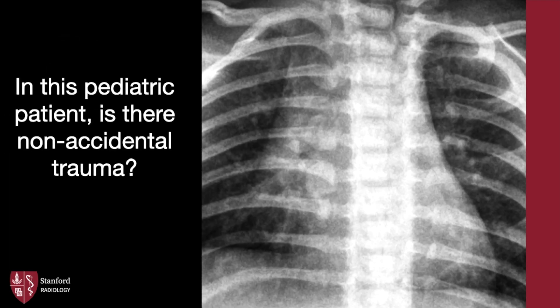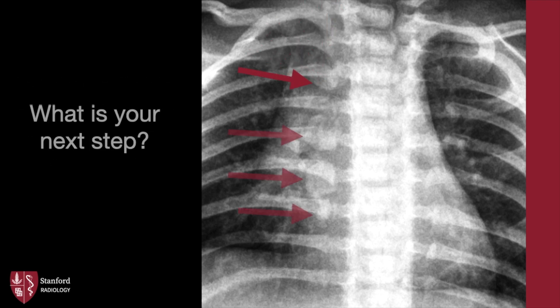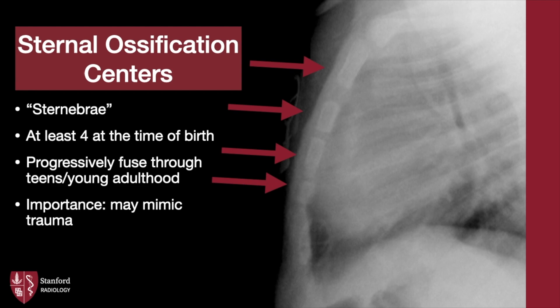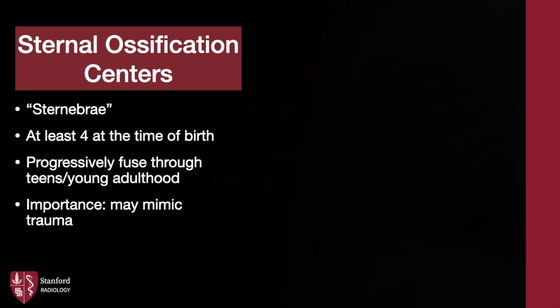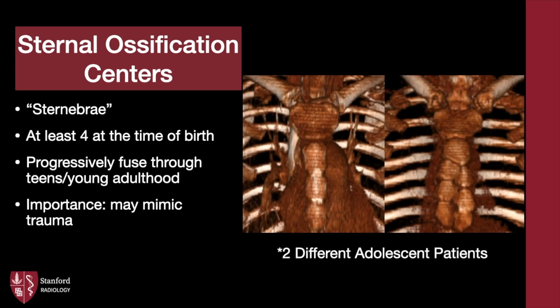In this pediatric patient, is there non-accidental trauma? There are multiple rounded densities projecting over the right costo-vertebral joints; the left side is spared. Fortunately, a lateral view saves the day — these are simply sternal ossification centers, also known as sternibrae. At least four may be present at birth with progressive fusion through the teens and young adulthood. Here are 3D renderings of unfused ossification centers in two different adolescent patients.